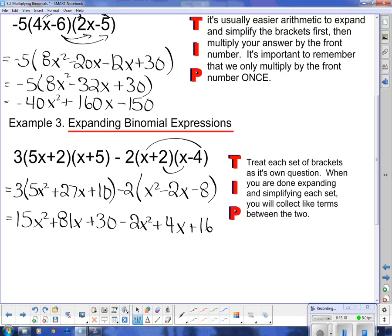And once you're done doing that, now it's a matter of collecting like terms between the two. 15x squared minus 2x squared gives me 13x squared. 81x and 4x gives me plus 85x. And positive 30 and positive 16 gives me plus 46. And we're done.